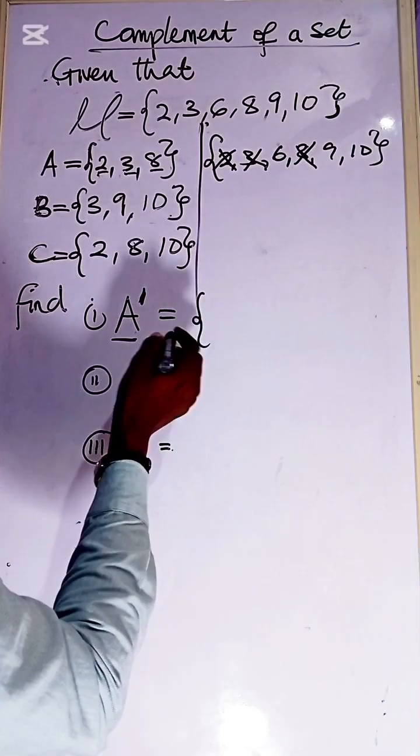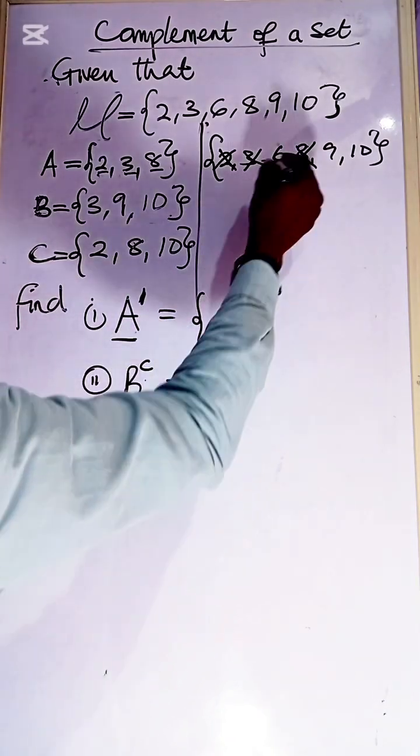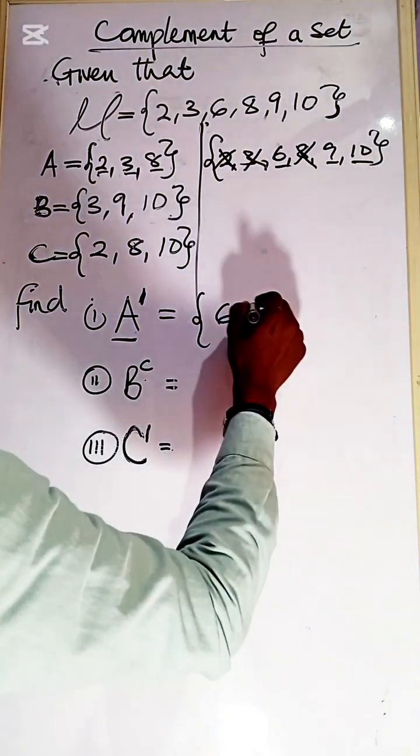So your A prime is going to give us what? 6 is left, 9 is left, and 10. So 6, 9, and 10.